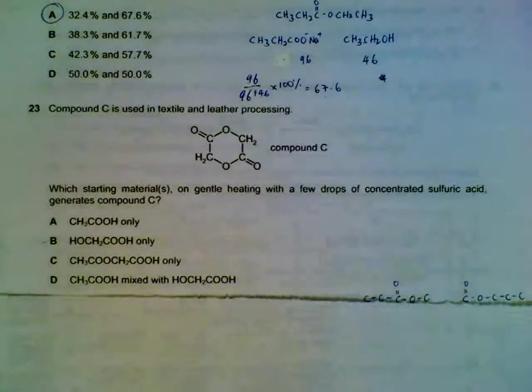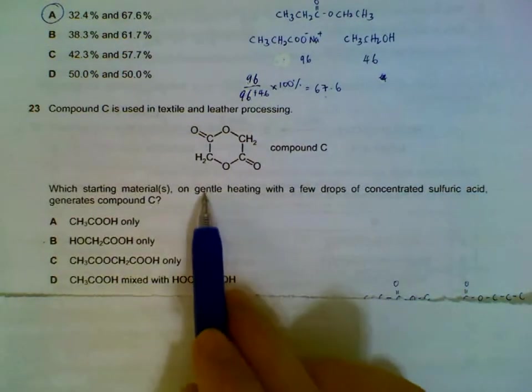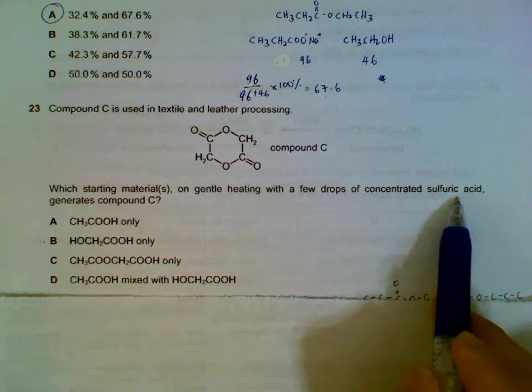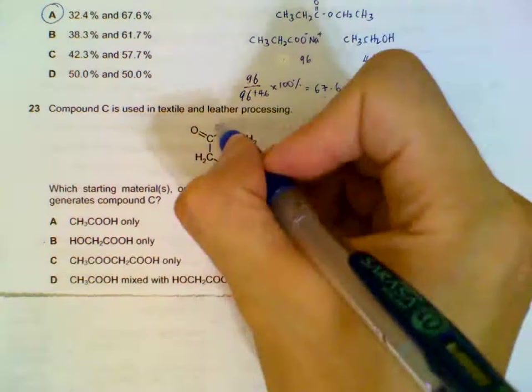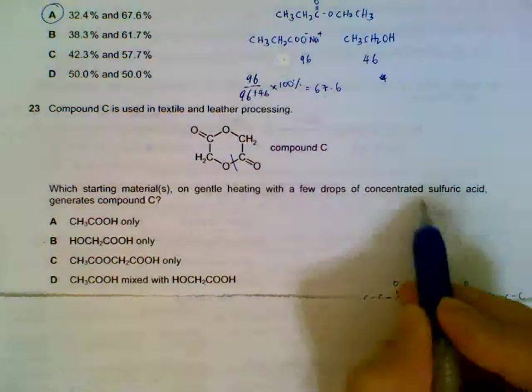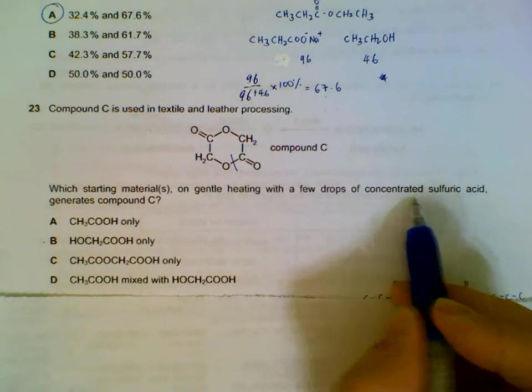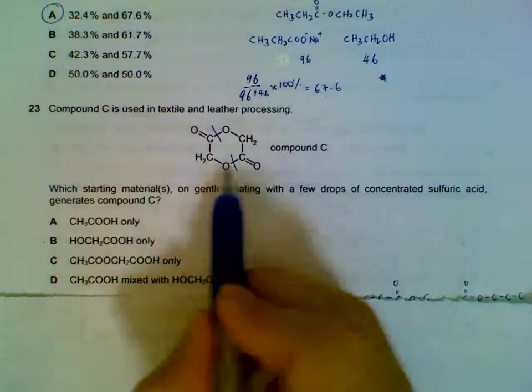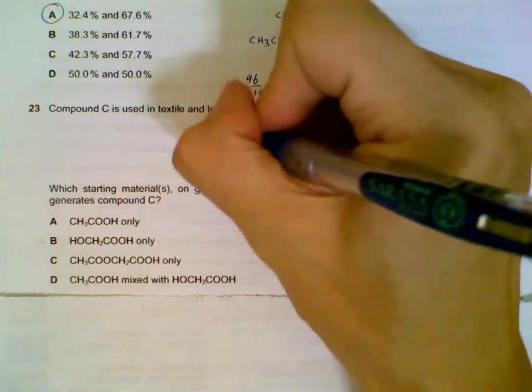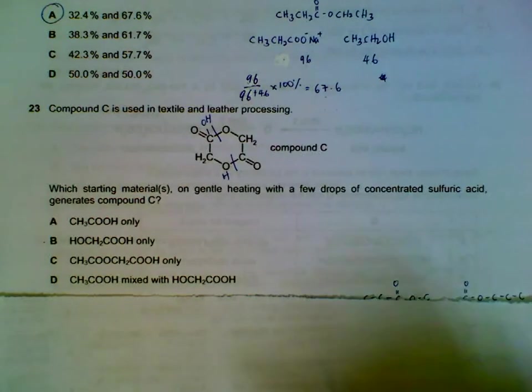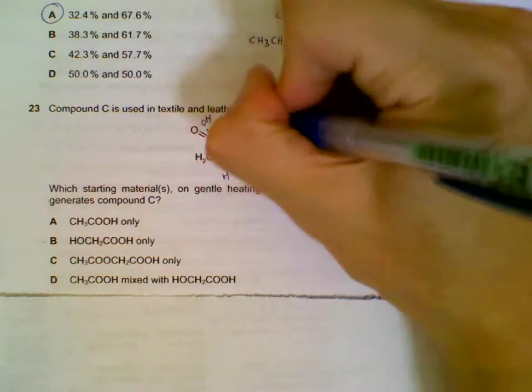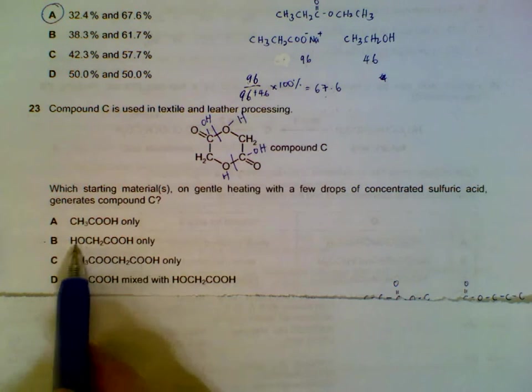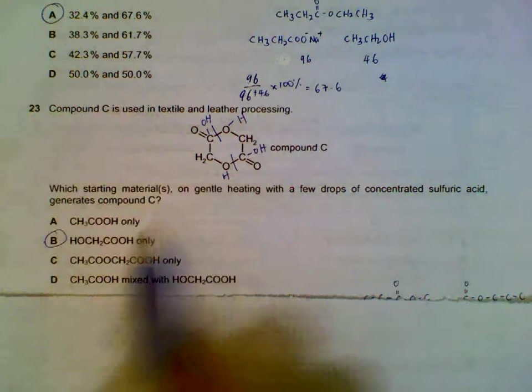Question 23: compound C. What materials can we use to generate compound C? Concentrated sulfuric acid. Notice that there are two ester bonds here, over here and over here. So your concentrated sulfuric acid is actually to ensure that esterification takes place. Before esterification we actually have two separate molecules: one that contains an alcohol group here and an acid group over here. Same for here, acid group and an alcohol group. So actually they are the same molecule, which is this molecule, one end with alcohol, one end with the acid. And when we esterify them, they will actually form the ring.